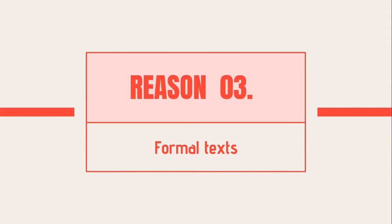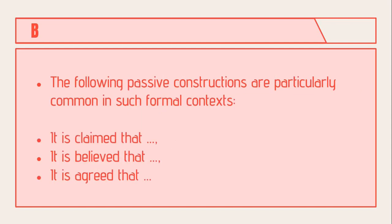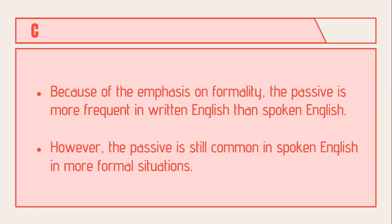The third reason we use the passive voice is for formal text. In more formal writing, the passive is preferred because it sounds less personal. This is especially true in scientific, technical, or academic writing. For example: 'The students were asked to complete the questionnaire.' Passive constructions like 'it is claimed that' or 'it is believed that' are particularly common in research papers and academic writing. Because of this emphasis on formality, the passive is more frequently used in written English than spoken English.